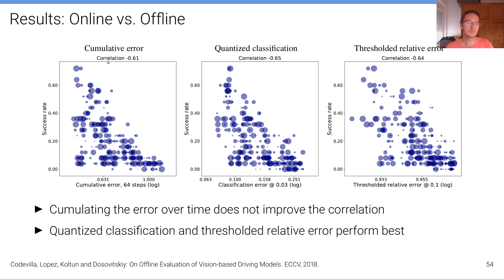We also see that the cumulative error, here's the cumulative error with respect to the success rate. And these quantized versions, which are a little bit more robust, perform best, but are still not as well correlated as the online metrics with respect to themselves.